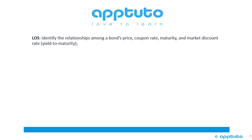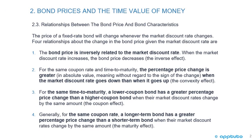This LOS is to identify the relationships among a bond's price, coupon rate, maturity, and market discount rate yield to maturity. Bond prices and the time value of money. We're looking at relationships between the bond price and bond characteristics. The price of a fixed rate bond will change whenever the market discount rate changes. Four relationships about the change in the bond price given the market discount rate are as follows.